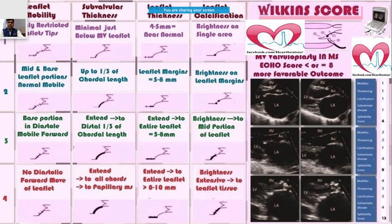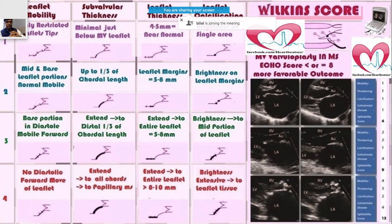Let's start today's session. We are going to go further deep about the usage of echocardiography — the different usages. As I had said, it is not only for valvular functions but also for regional wall motion abnormality. You can assess the heart's function as well as any emergency usage, so there are plenty of indications in which echocardiography can be used.